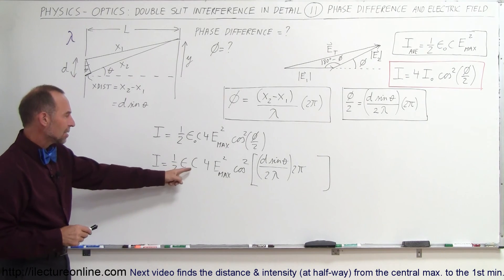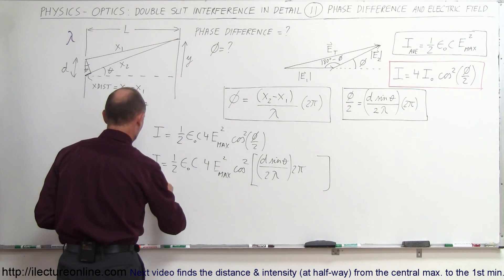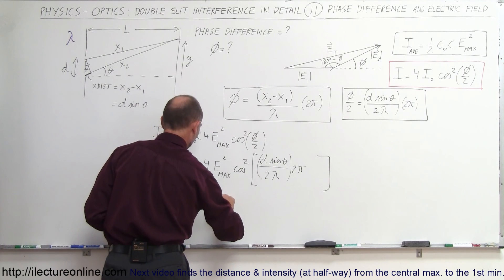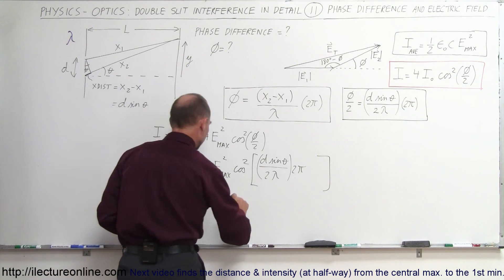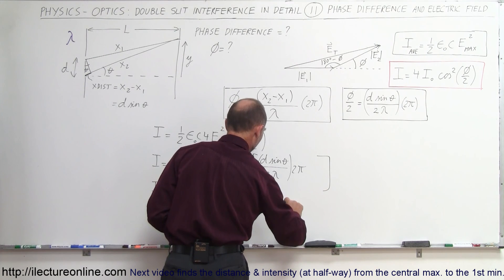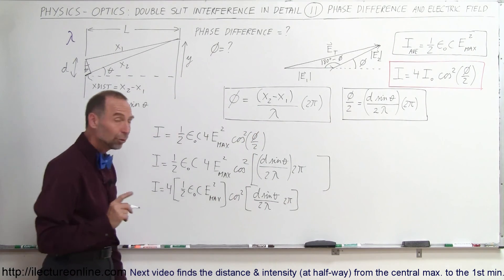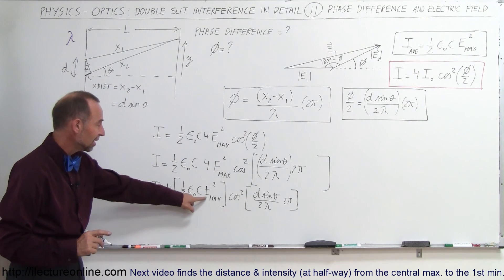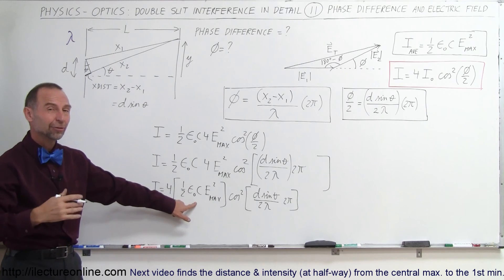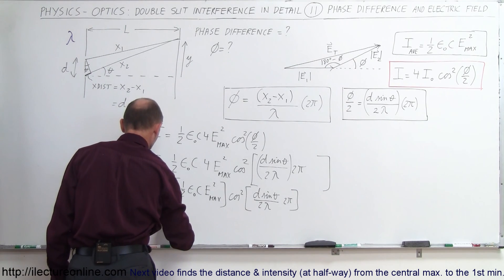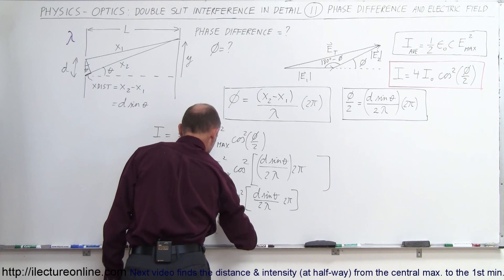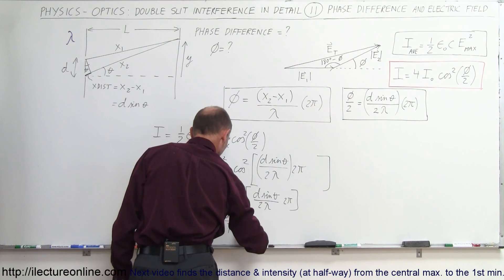This can be written as I equals 4 times one-half ε₀c E_max² times the cosine squared of D sinθ divided by 2λ times 2π. We recognize that one-half ε₀c E_max² is the intensity of either one of the two light waves coming through the slits — that is I₀, the intensity of a single light wave. So the equation becomes I = 4I₀ cos²(D sinθ / 2λ × 2π).